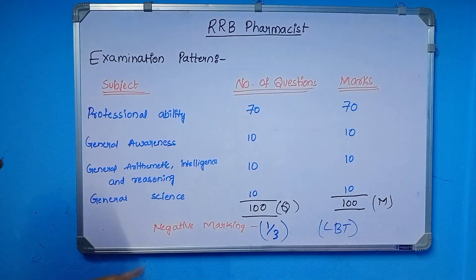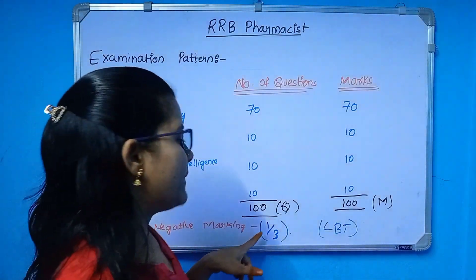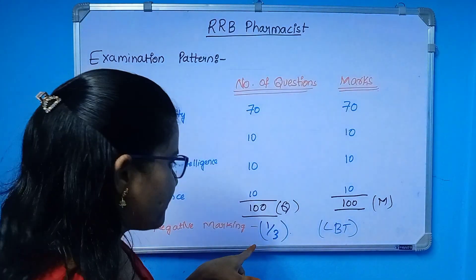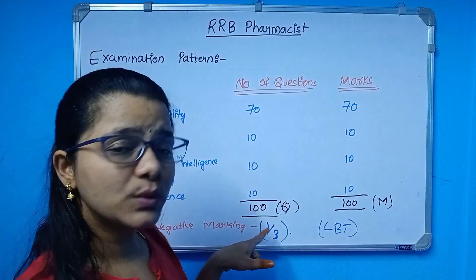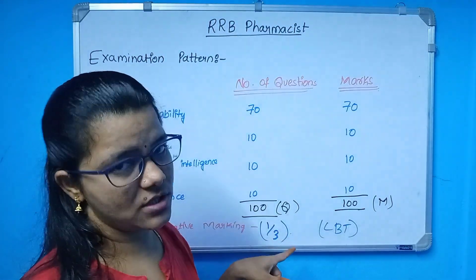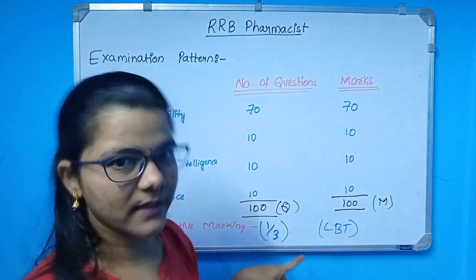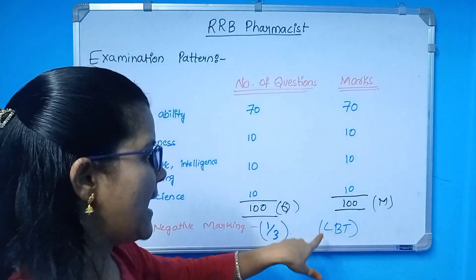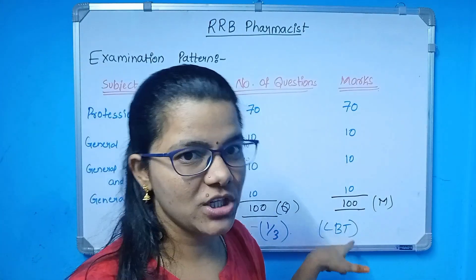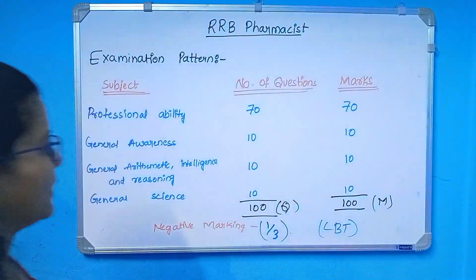The main drawback here is negative marking. Negative marking is 1 is to 3, meaning if 3 questions are wrong, then we have 1 mark minus. This is a computer-based examination.